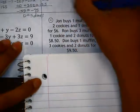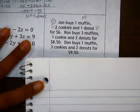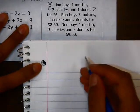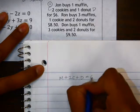So we have three variables here. We have muffins, donuts, and cookies. Let's see if we can write a system of equations to represent this. So he buys one muffin, two cookies, and a donut, and pays $6.